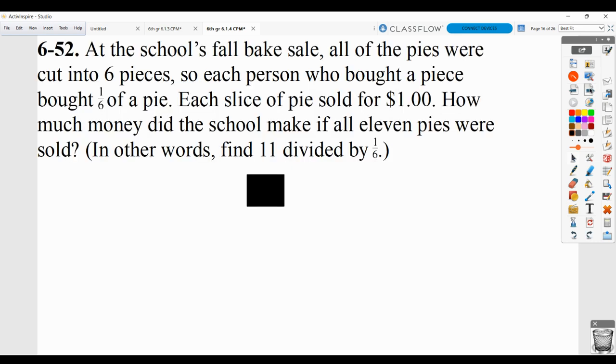At the school's fall bake sale, all the pies were cut into 6 pieces, so each person who bought a piece bought 1 sixth of a pie. Each slice of pie sold for a dollar. How much money did the school make if all 11 pies were sold? In other words, what's 11 divided by 1 sixth? Now, you do need to show your work for this.